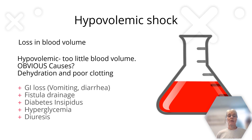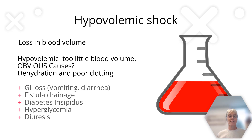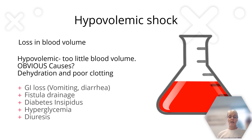The first type of shock we're going to talk about is hypovolemic shock. Using basic vocabulary, hypovolemic simply means there's a loss of blood volume. This blood volume is actually lost from the body itself — basically too little blood volume is circulating. Obvious reasons would be a patient who is severely dehydrated or a patient who is bleeding. There are several listed causes of hypovolemic shock that you should be aware of and understand how they decrease circulating volume.